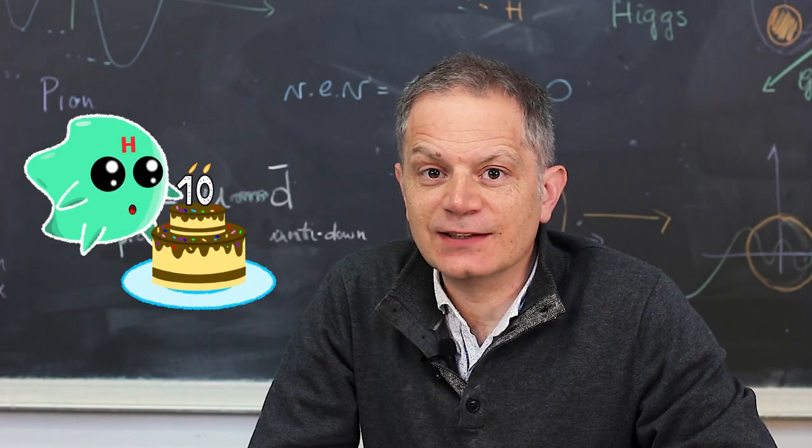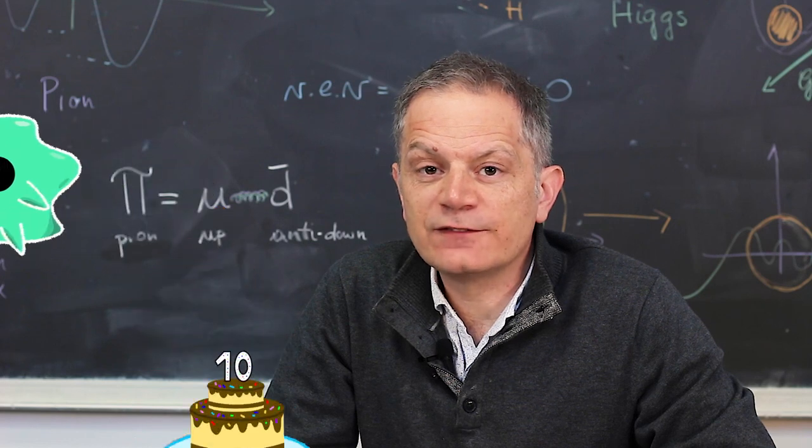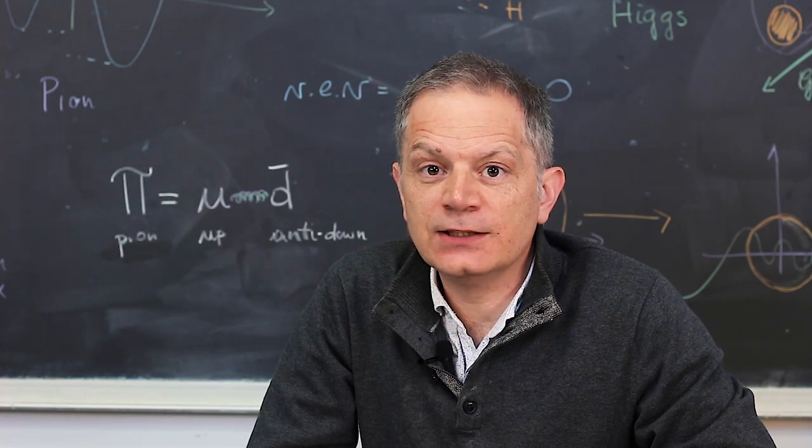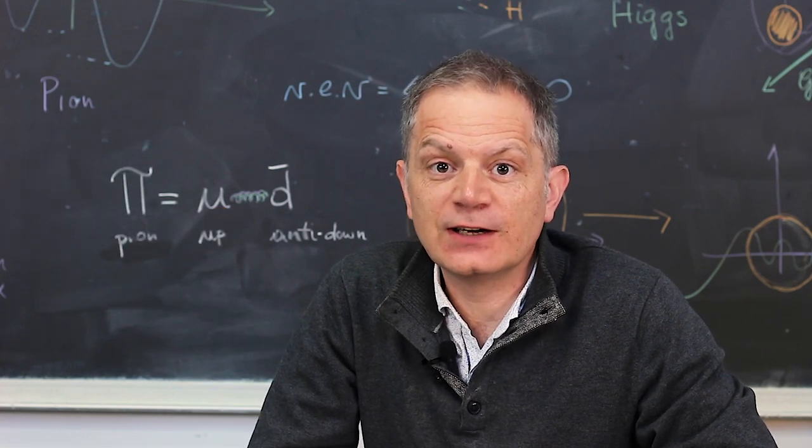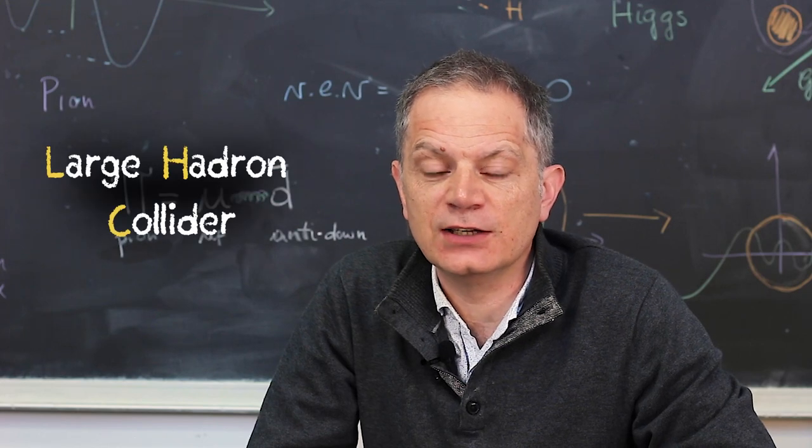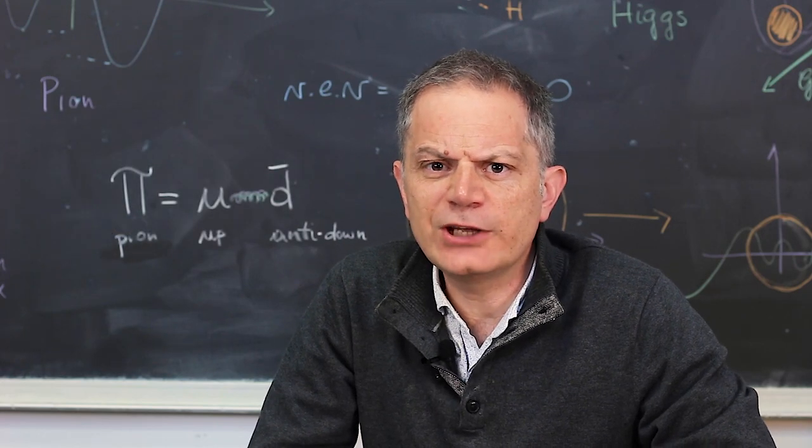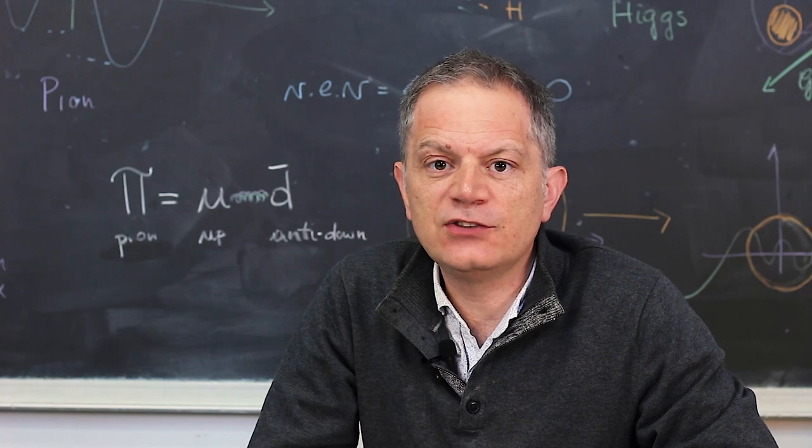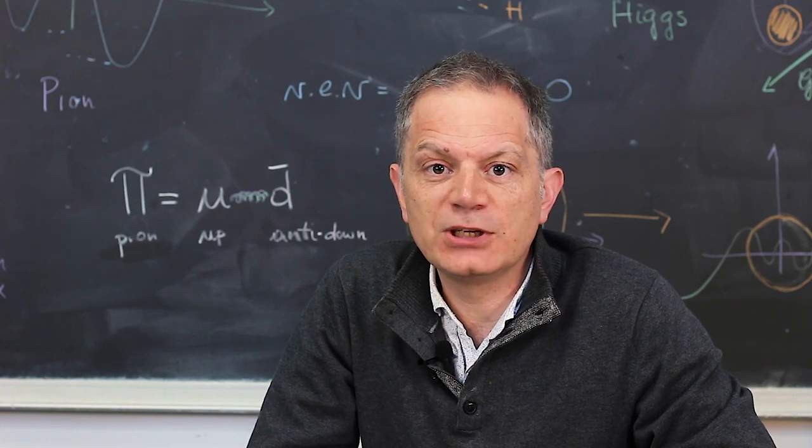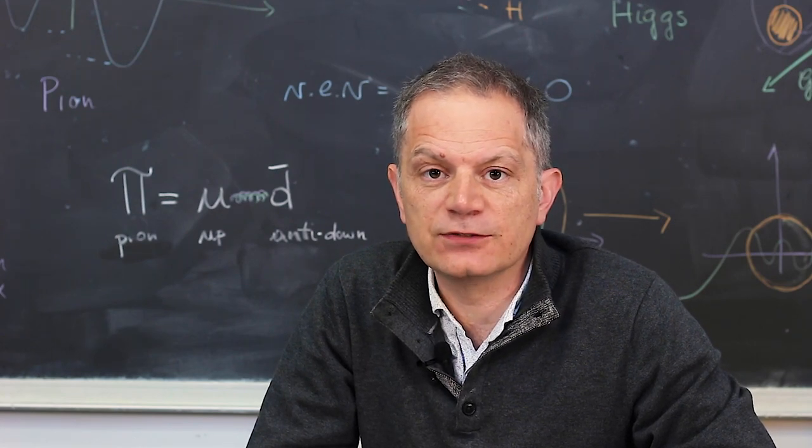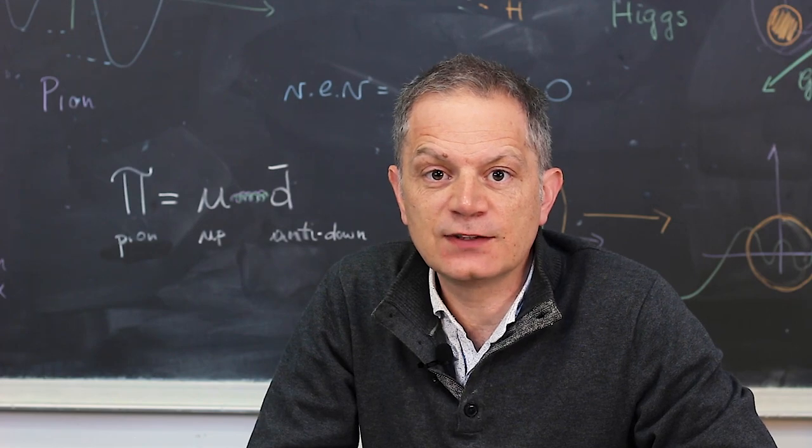The Higgs is turning 10. It was in 2012 that the Higgs particle was finally produced and observed at the Large Hadron Collider at CERN near Geneva. It was a great success for particle physics, and its early prediction is one of the biggest achievements in theoretical particle physics. Nevertheless, there are still many mysteries surrounding this particle.